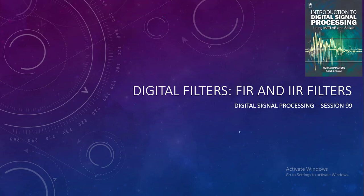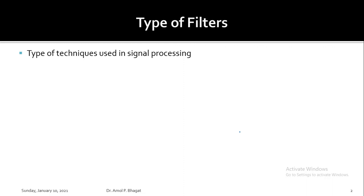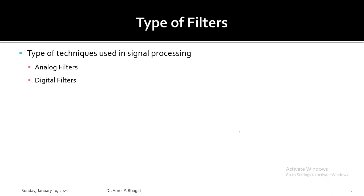Depending on the type of techniques used in signal processing, filters are classified as analog filters and digital filters. If a filter is processing an analog signal, it is called an analog filter; if it is processing a digital signal, it is referred to as a digital filter.